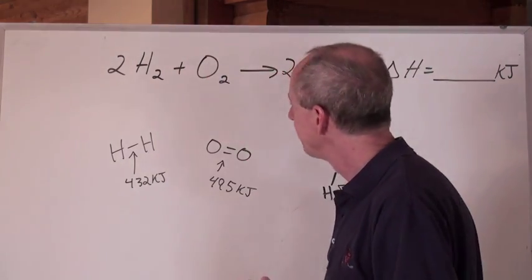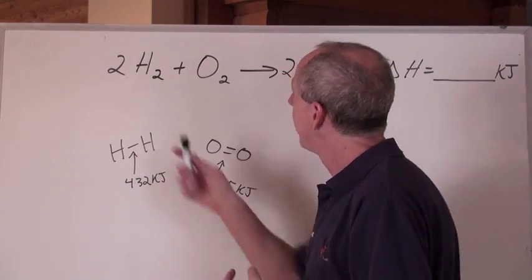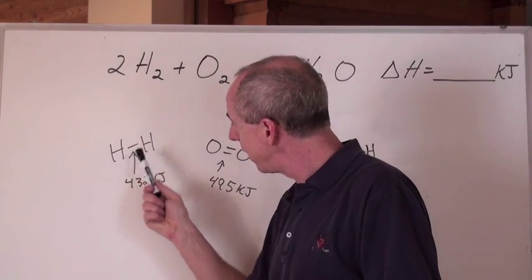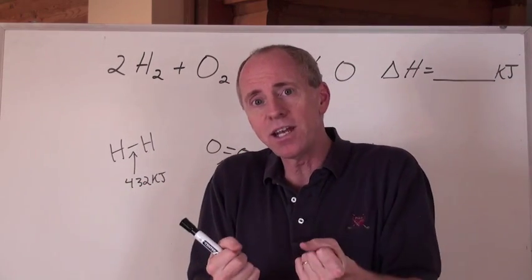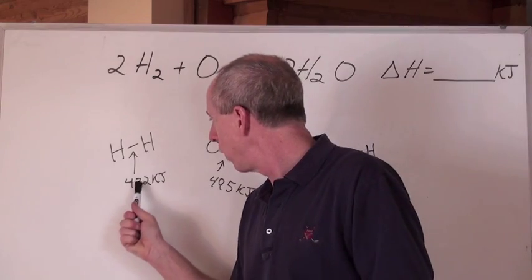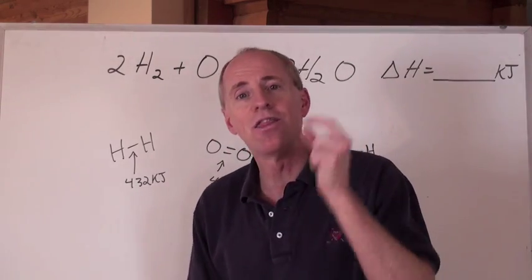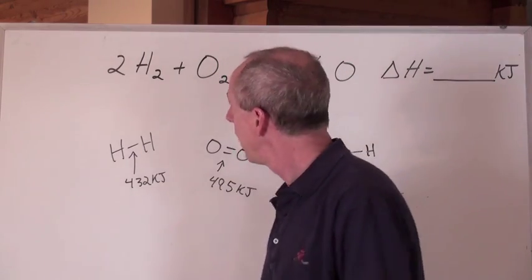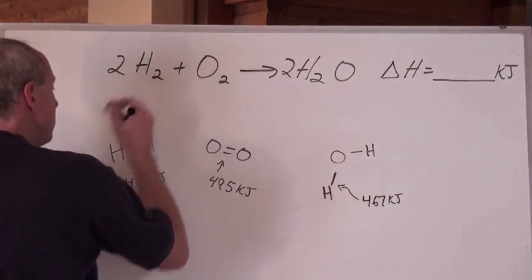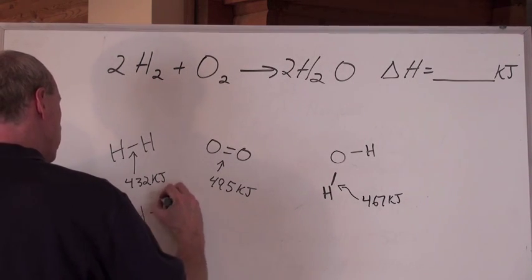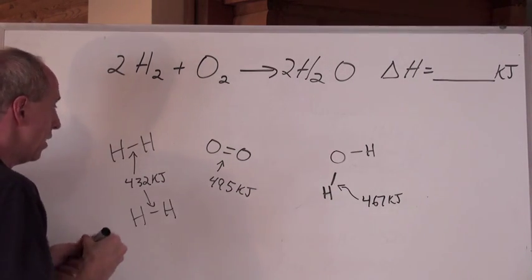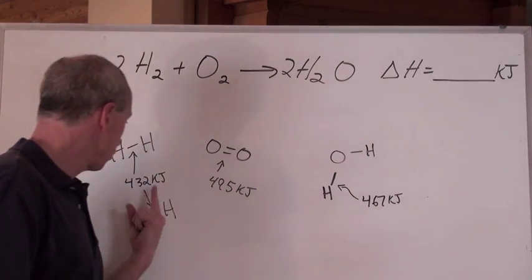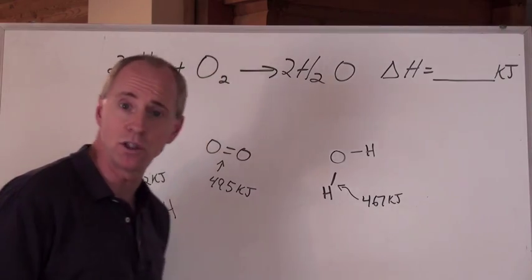Here's how you use that. H₂ is two H's bonded together, and that bond has an energy of 432 kilojoules — that's how much energy it takes to break the bond between the hydrogens. The coefficient 2 in front means you've actually got two of these, so the amount of energy needed to break apart those hydrogens is 432 times 2.